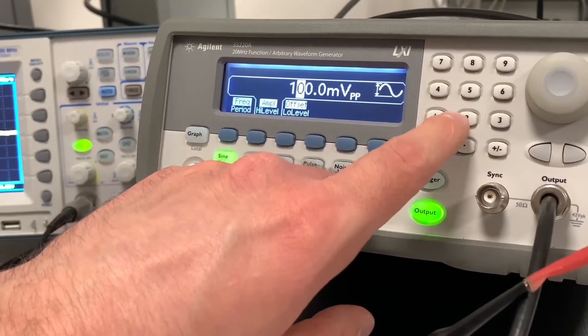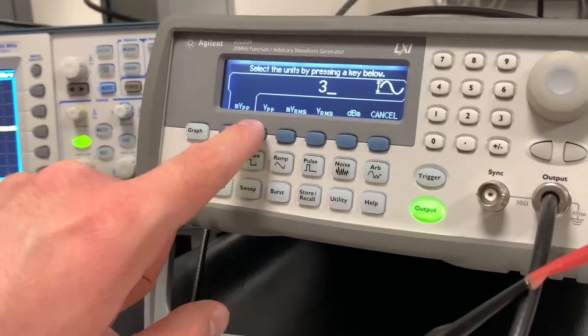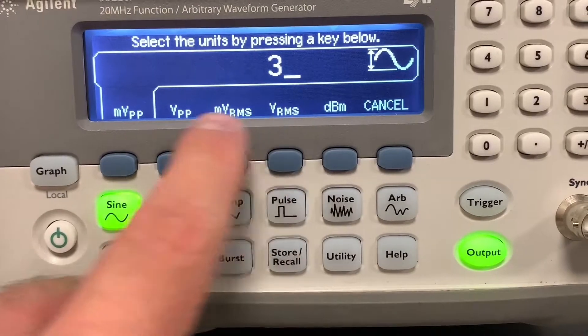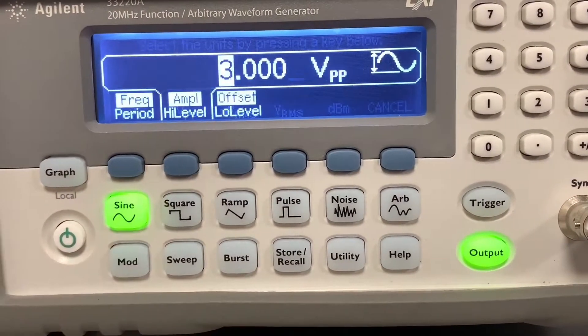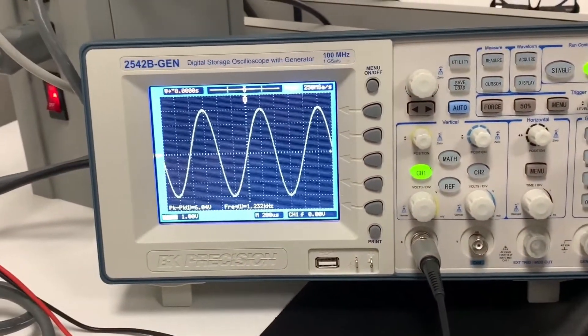We'll go back to our function generator and type in a number here. In this case, I'm going to say I want the peak to peak to be three volts. So type in the number three, and then you can see our divisions of volts here, or the representation of volts. So I'm going to say three volts peak to peak. You heard it click, and then look at the scope, and you can see the signal show up now.